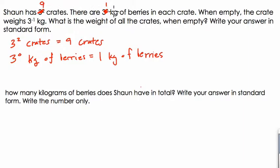Sean has 9 crates, and there is 1 kilogram of berries in each crate. Now it says when empty, the crate weighs 3 to the negative 1 kilograms. Over here I'm going to write 3 to the negative 1 kilograms is the weight of the empty crate. So I'll write empty for myself. Empty crate.